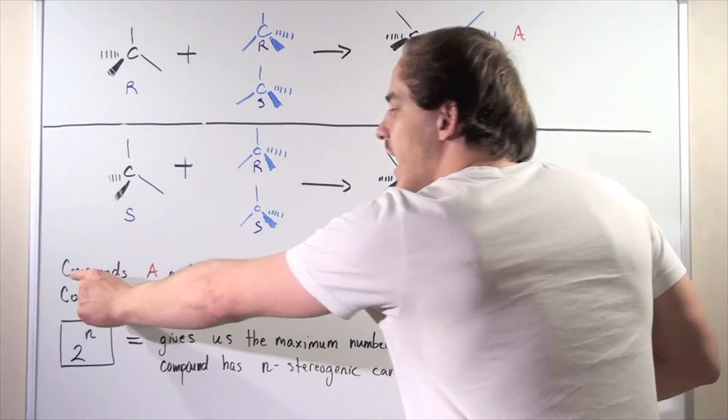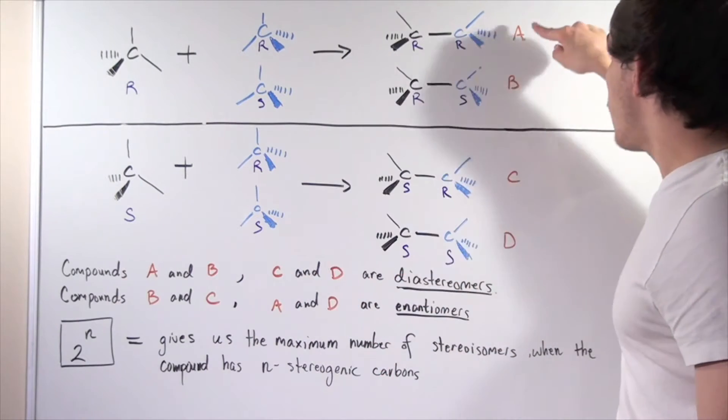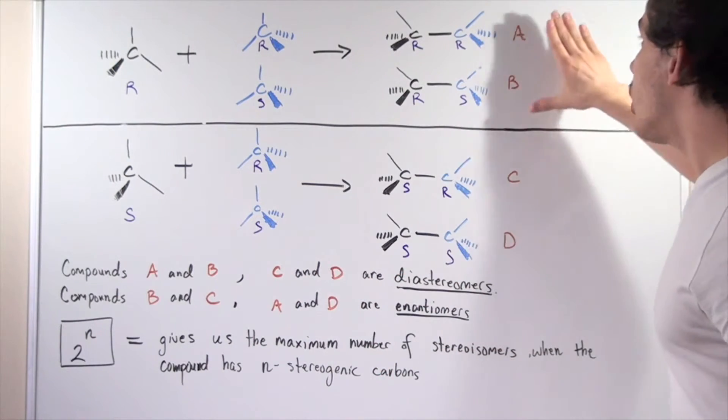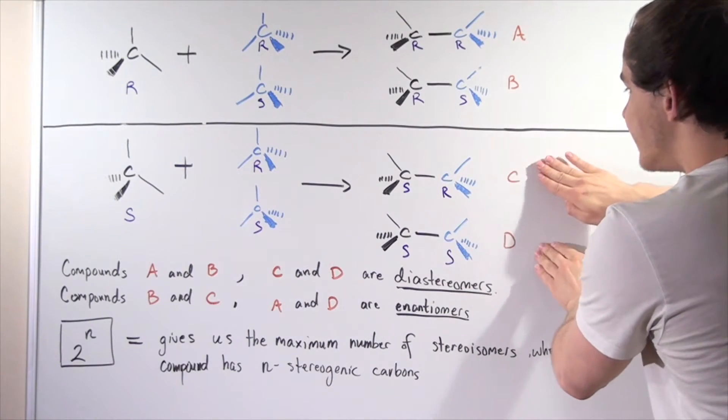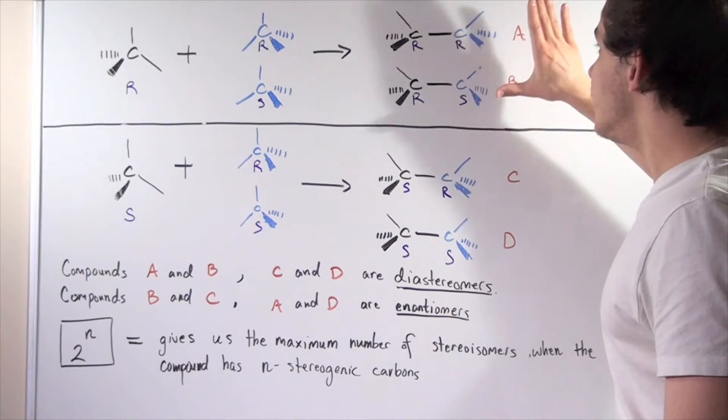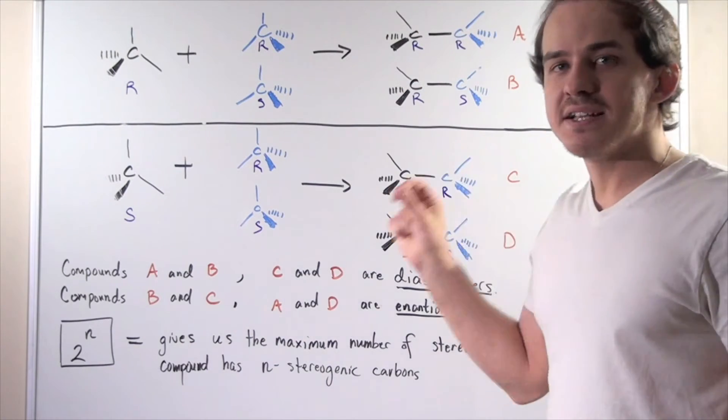Now compounds A and B and compounds C and D are not enantiomers. But they still have the same molecular formula. So they must be stereoisomers.